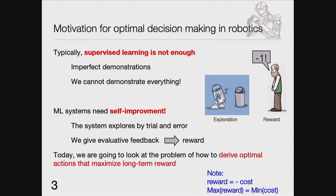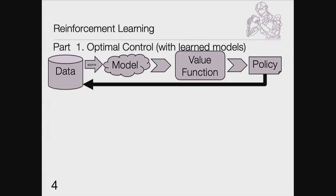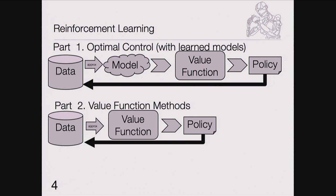What you'll see today is how we can derive actions that maximize the long-term reward. We'll start with optimal control from learned models — creating a data set, learning a forward model, obtaining a value function, deriving a policy, then going back to data generation. Then we'll get rid of the model in between, which has severe implications.